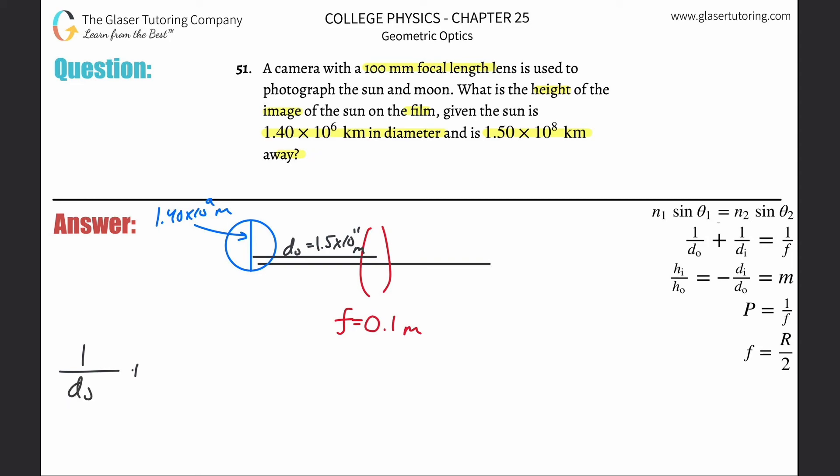I'm going to use the thin lens equation: one divided by the object distance plus one divided by the image distance equals one divided by the focal length. Solve this for image distance, subtract this term over to the right hand side, and then cross multiply these two terms.